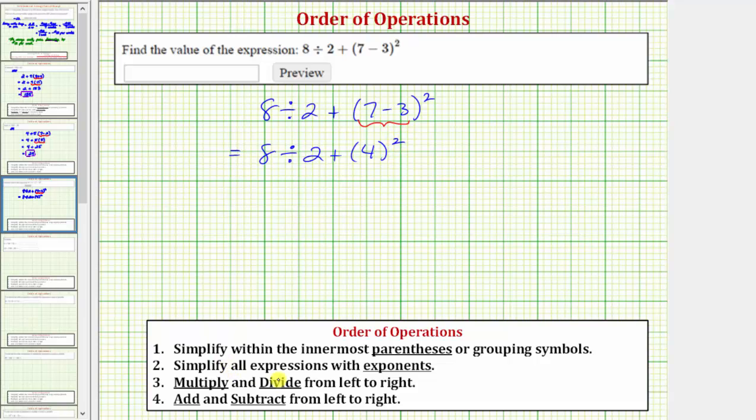Step 2, we want to simplify all expressions with exponents, which means for the next step we want to simplify 4 squared or 4 to the second. And because 4 squared equals 4 times 4 which equals 16, the expression simplifies to 8 divided by 2 plus 16.